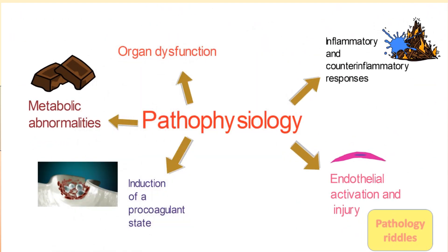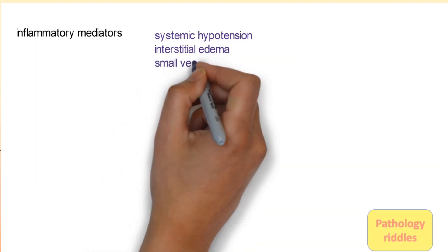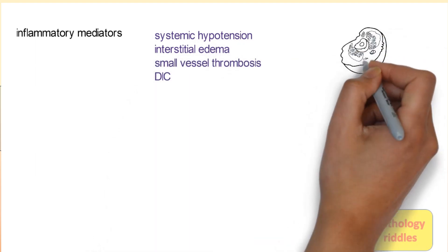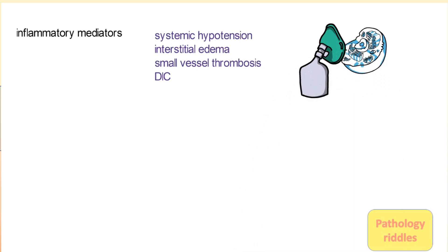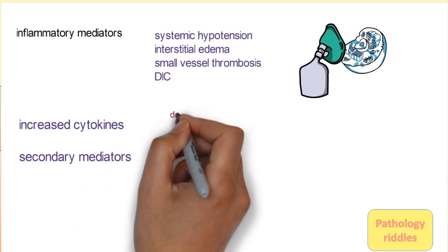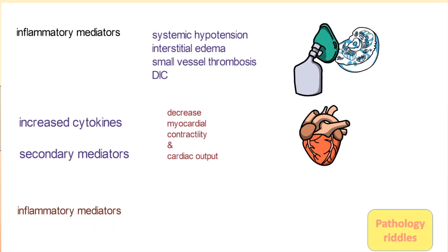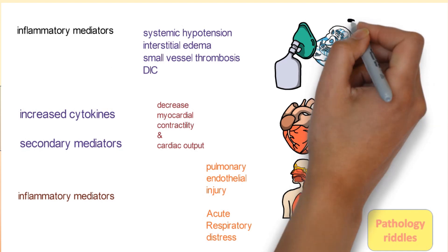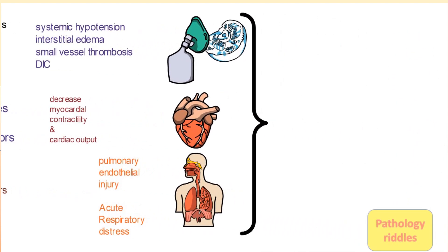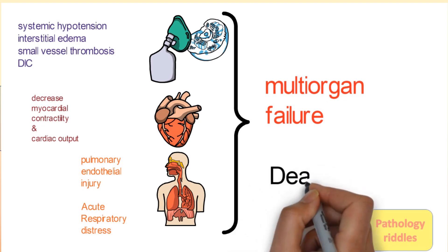Mechanism 5: Organ dysfunction. Due to inflammatory mediators, there is systemic hypotension, interstitial edema from leaky vessels, and small vessel thrombosis from DIC — all leading to decreased oxygen and nutrient delivery and cellular hypoxia. Increased cytokines and secondary mediators cause decreased myocardial contractility and cardiac output, and mediators cause pulmonary endothelial injury leading to acute respiratory distress, meaning lungs are unable to meet the oxygen demands of the body. Finally, failure of multiple organs — mainly kidneys, heart, liver, and lungs — leads to death.